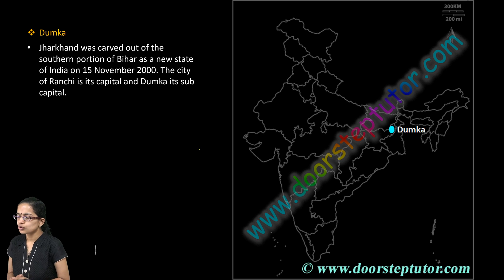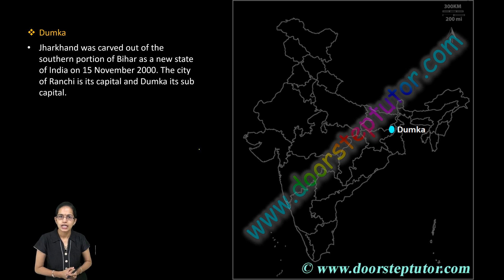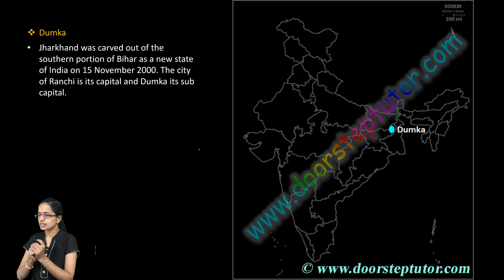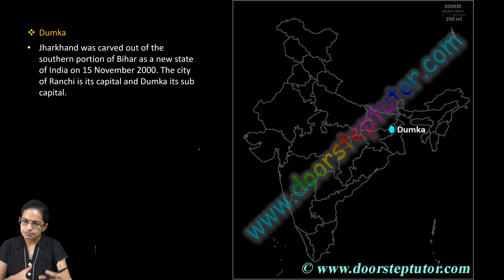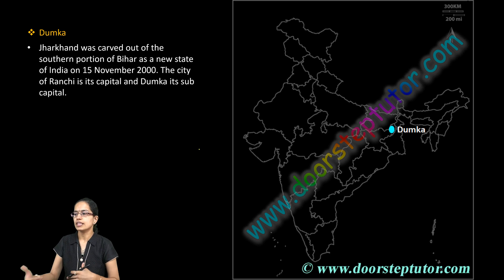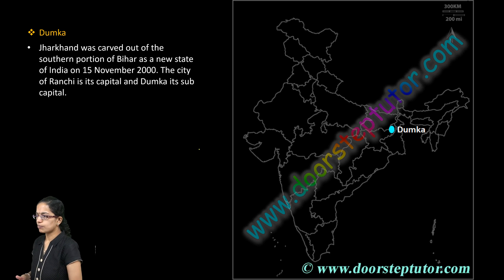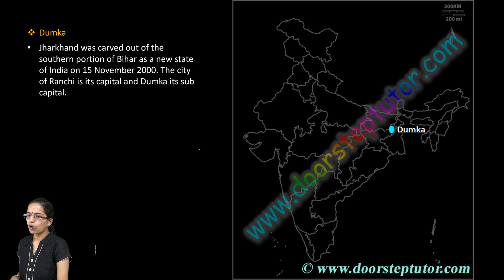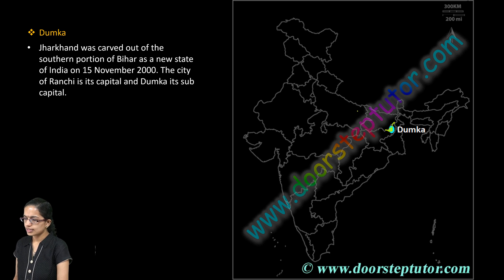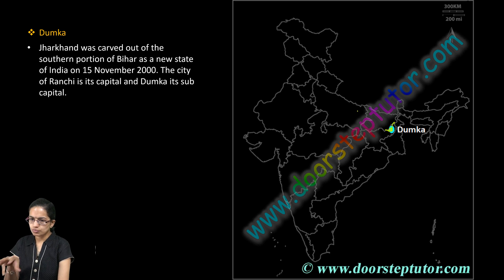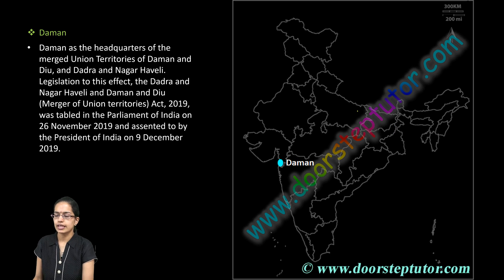The next is Dhumka, located in Jharkhand. It is important because the city is a sub-capital of Ranchi. It lies in the southern region of Bihar and was carved out from the south portion of Bihar, now lying in the regions of Jharkhand.